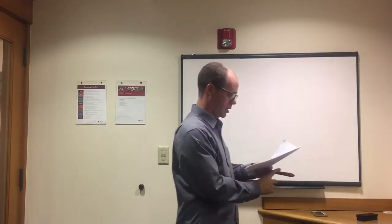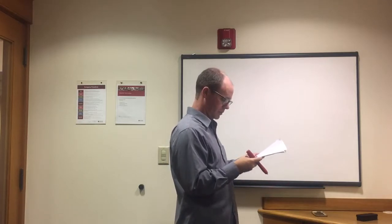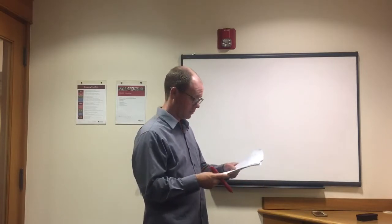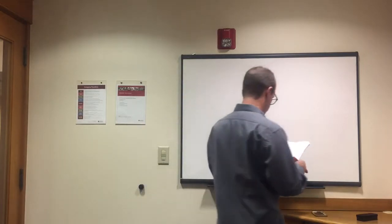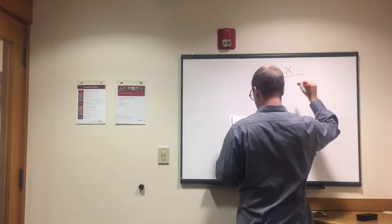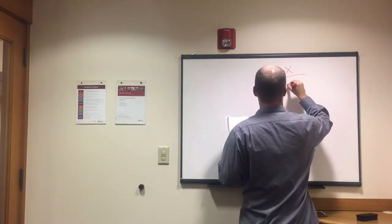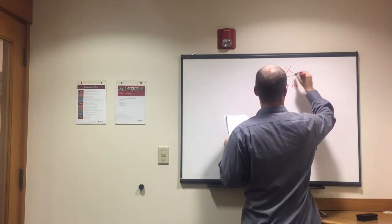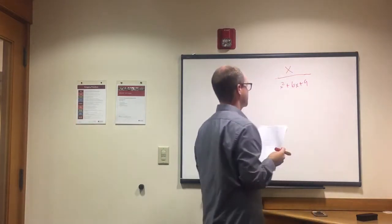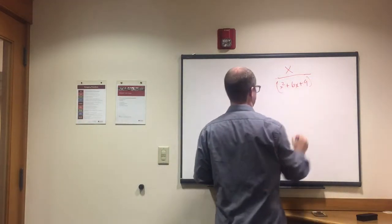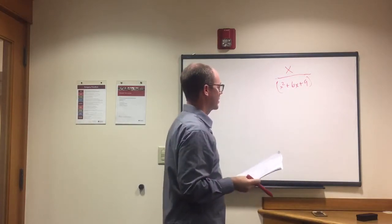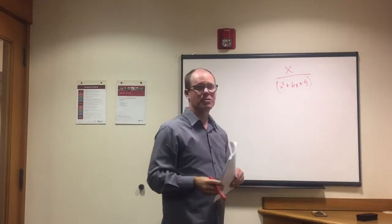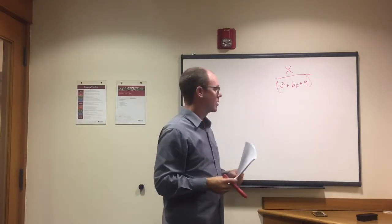The second one is harder. The domain would be all possible values of x, that's what they're asking you. So you have something like this: x divided by x squared plus 6x plus 9.